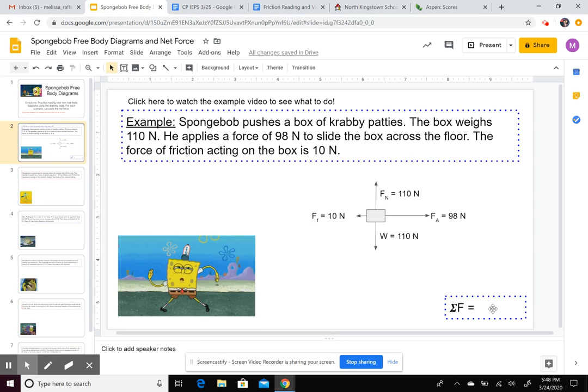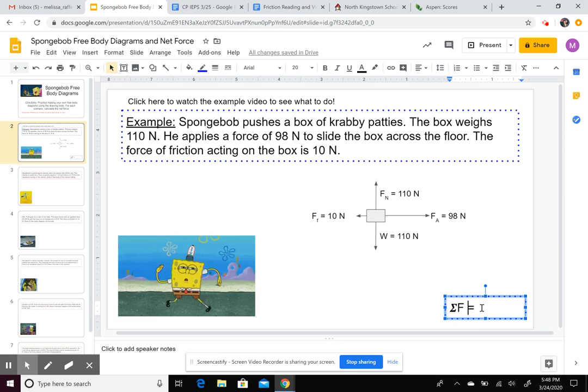Last thing you want to do is calculate net force. That's what that symbol means right there, net. Sigma. Sigma F is net force, total force acting on the object. So vertically, those two forces cancel each other out, so we don't have to worry about those two. But then horizontally, we have 98 Newtons going one way, 10 pulling the other way. So 10 of those Newtons cancel out 10 Newtons over here. So we're left with 88 as our answer here. You could put a positive sign in there because the positive force is winning right now. It's the bigger force.